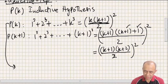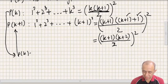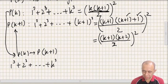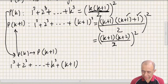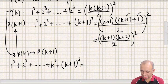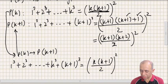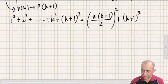Now we start from the inductive hypothesis and try to reach P(k+1). We had 1³ + 2³ + ... + k³. Going from P(k) to P(k+1), we add an extra term. Adding to the left-hand side means we also do that on the right: [k(k+1)/2]² + (k+1)³.